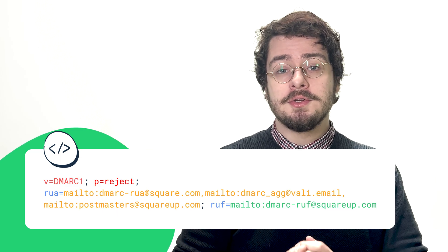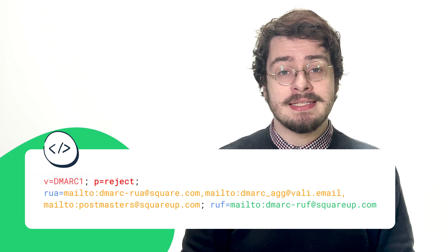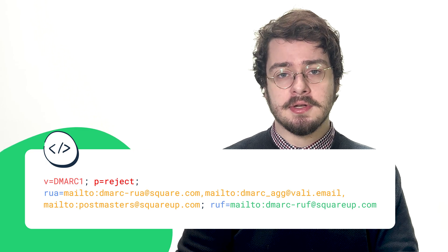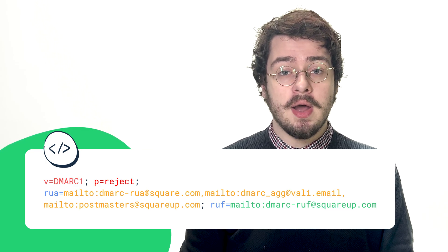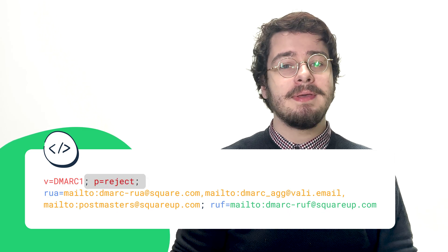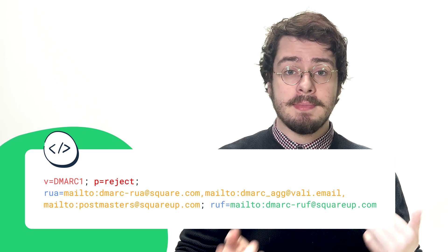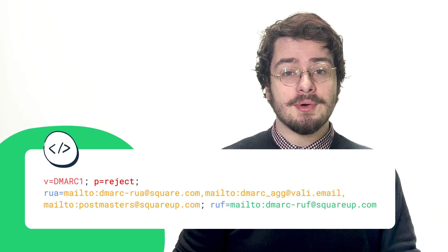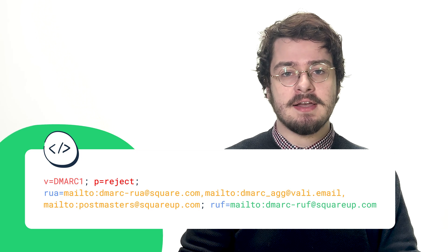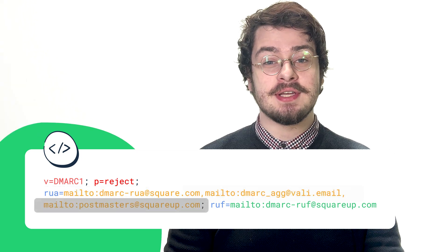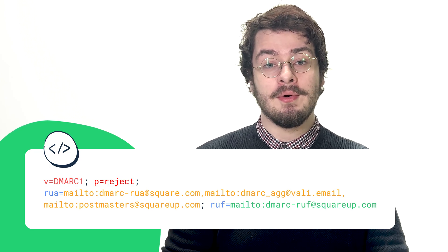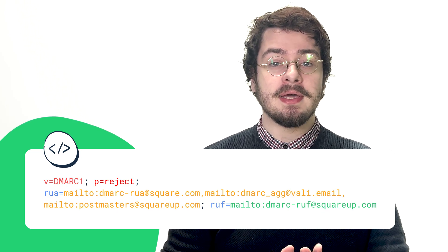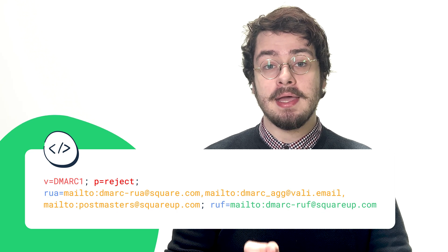Let's go through each tag to properly understand them. V=DMARC1 is the identifier of the DMARC version and should always be included in the DNS record since the receiving server will search for it — if this identifier is missing or modified, the whole verification process will be skipped. P=reject indicates the selected policy. The policy Square chose is to reject all emails that fail the DMARC check. The three addresses in the record will be receiving daily aggregate reports about emails that failed verification — high-level data about reasons for failures. Each address must have a mailto tag before them.